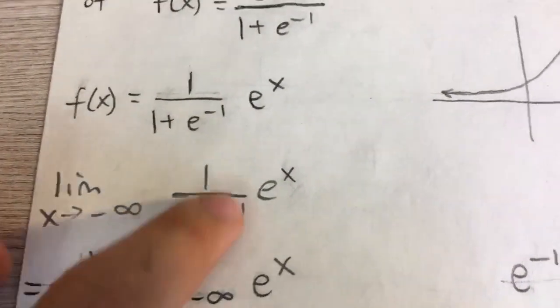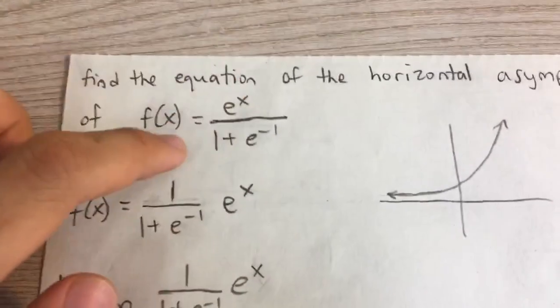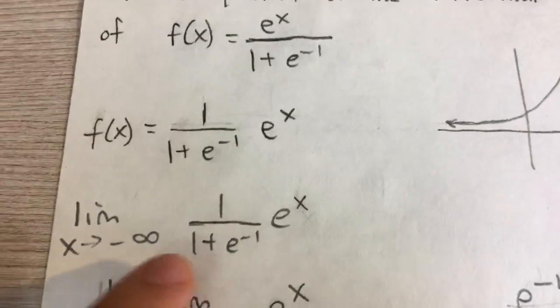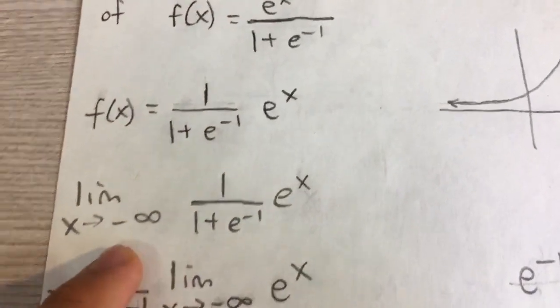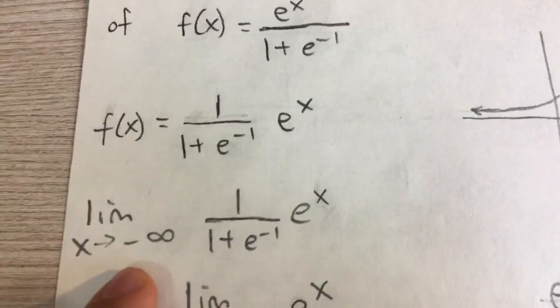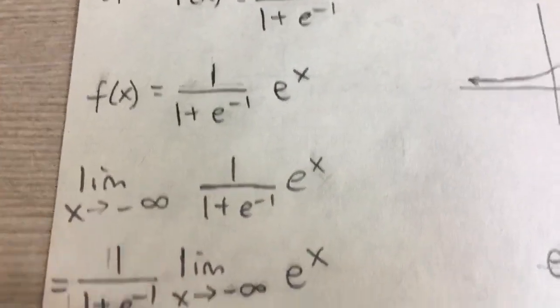And so let's take the limit of this expression. That's our original problem. These two are the same. As x approaches negative infinity, that will give us the equation of the horizontal asymptote.